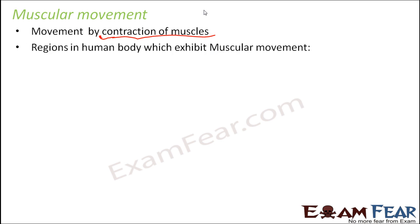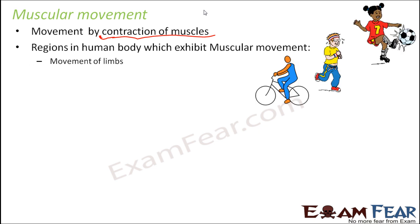This contraction of muscles happens only in certain regions of our body. Some of the regions in the human body which exhibit muscular movement are movement of limbs — like movement of your hands and legs. All of these are caused due to muscle contraction, like when you are riding a bicycle, running, jogging, exercising, or playing — your limbs are moving. Movement of the jaw, tongue, and eyelids also involve muscles.